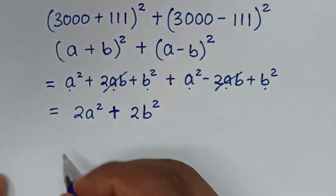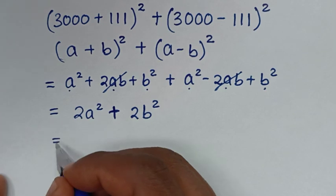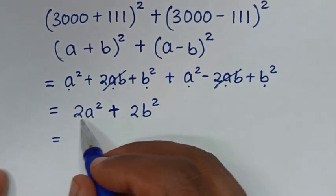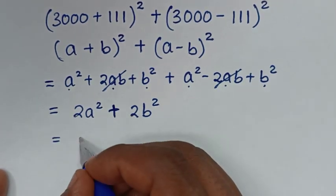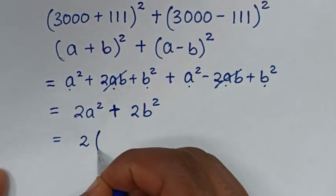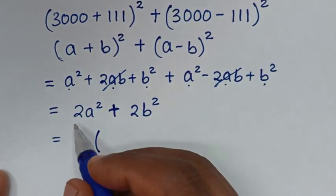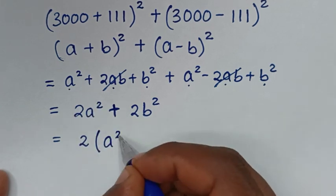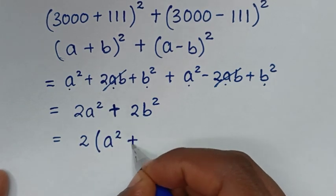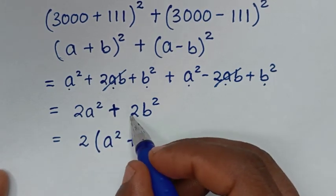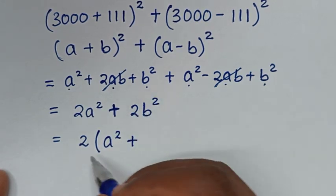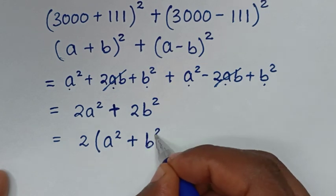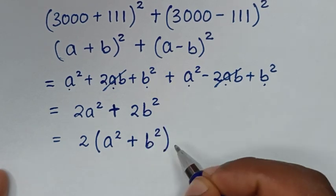Then, in the next step, it will be equal to — 2 is common, so we take 2 out of the bracket: 2a squared divided by 2 is a squared, then plus 2b squared divided by 2 is b squared, giving us 2(a squared plus b squared).